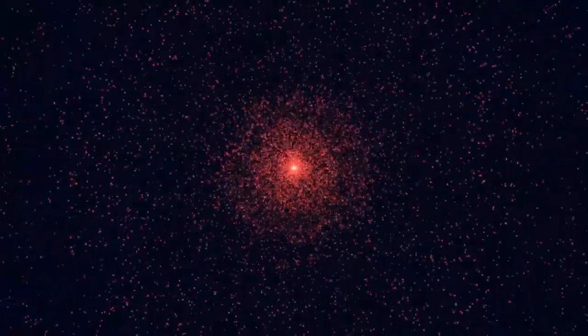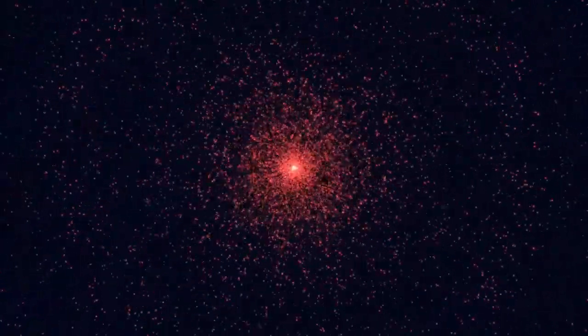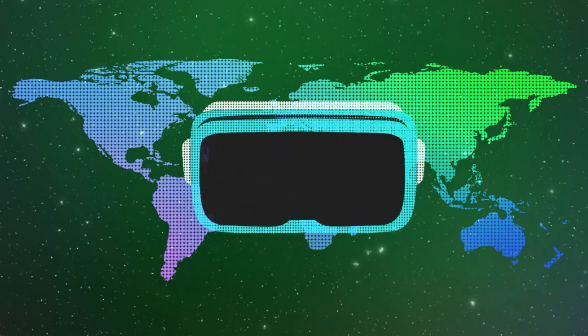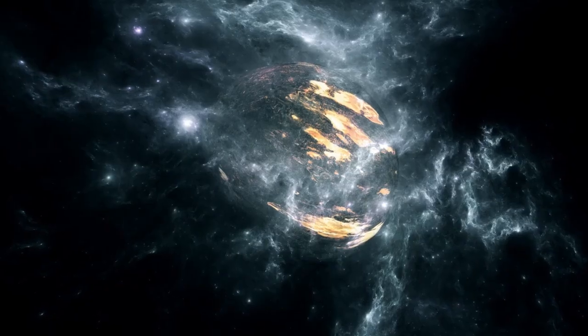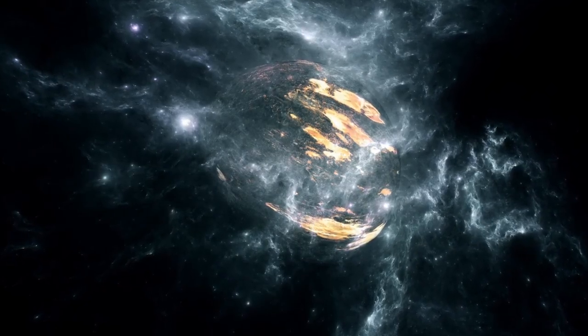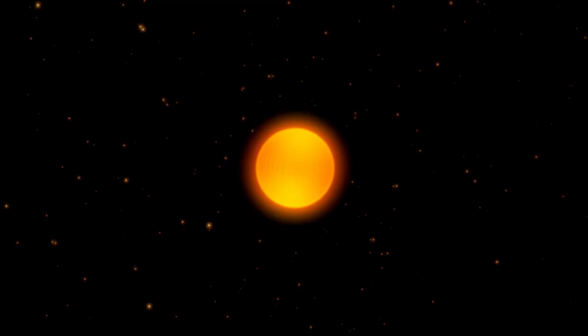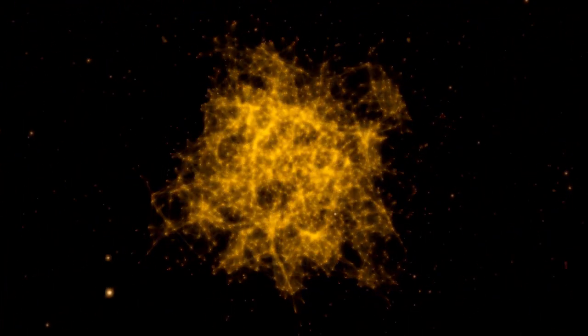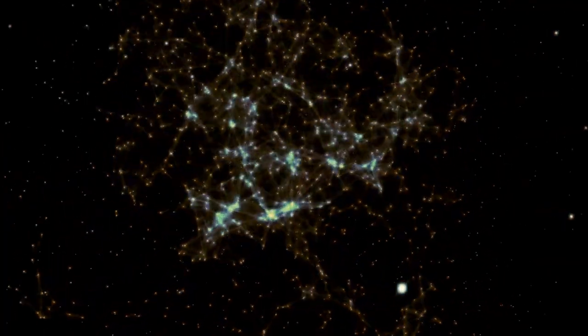This violent process, referred to as spaghettification, stretches matter into elongated filaments reminiscent of strands of pasta. The gravitational gradient is so intense that it rips apart the internal structure of the object, which is then absorbed into the singularity at the black hole's core.